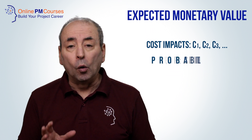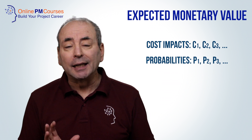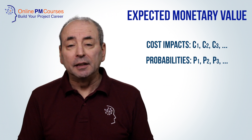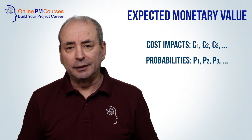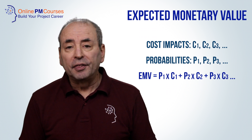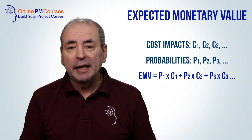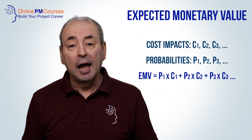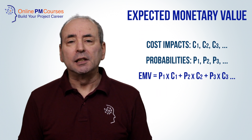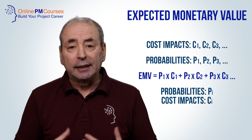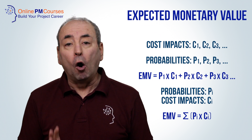And let's refer to the different probabilities or likelihoods of each of those impacts as P1, P2, P3, and so on. The total estimated monetary value is therefore calculated by adding together all of the individual EMVs. That is, the total EMV is P1×C1 plus P2×C2 plus P3×C3 and so on. Mathematicians would use a suffix i to represent a generalized probability or cost, and show that the total EMV is the sum — that's the Greek letter sigma — of all of those multiples.